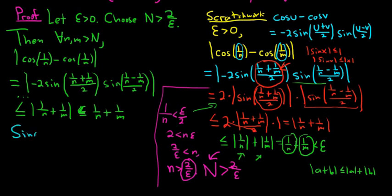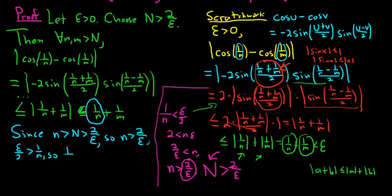So since little n is bigger than capital N, which is bigger than 2 over epsilon, this means that little n is bigger than 2 over epsilon. We want to control 1 over n. What does that mean? We want to make it less than epsilon over 2. So we have to solve for 1 over n. So we're going to multiply by the reciprocal. I'm going to multiply by epsilon over 2 and divide by n all in one move. This will be epsilon over 2 is greater than 1 over n. So 1 over n is less than epsilon over 2.